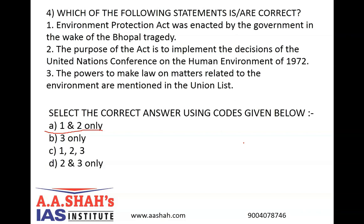The Act explicitly prohibits discharges of environmental pollutants in excess of prescribed regulatory standards. There is also a specific prohibition against handling hazardous substances. Section 19 provides that any person, in addition to authorized government officials, may file a complaint with a court alleging an offense under the Act. This citizen suit provision requires that the person give notice of not less than 60 days of the alleged offense of pollution to the central government.